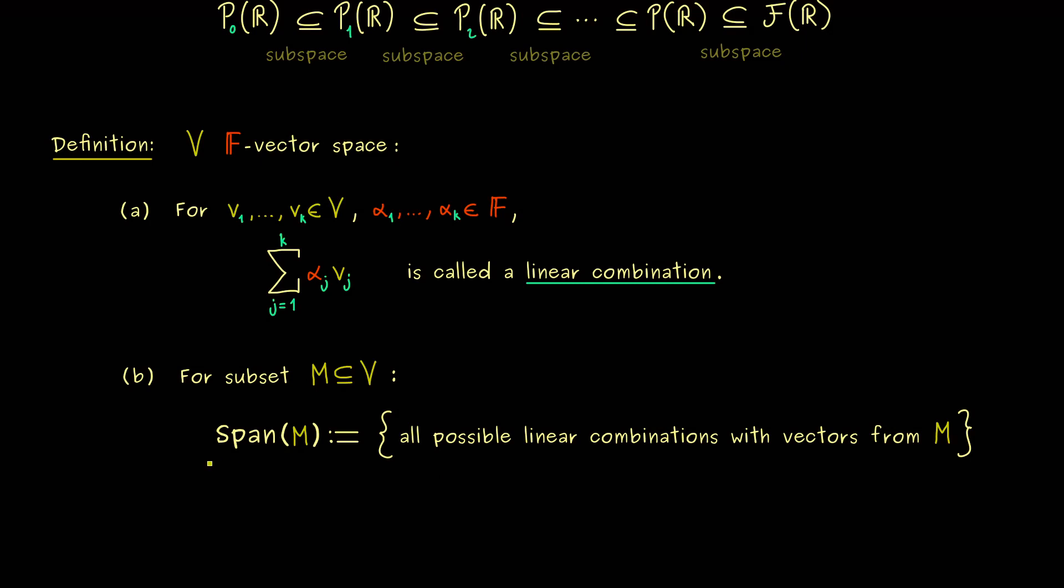And again please don't forget the sum in the linear combination is a finite sum. But of course still you can choose k as big as you want. Hence in the end what we get here is that span of M is always a subspace in V. And therefore we also want to extend this definition to the empty set, which means this should be the smallest possible subspace so the subspace that only contains the zero vector. Hence with both definitions here we get that span of M is always a subspace in V.